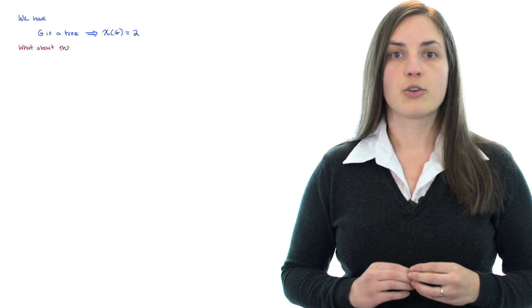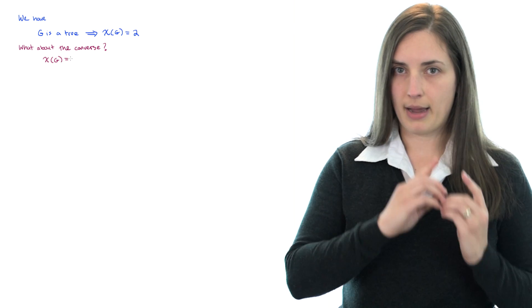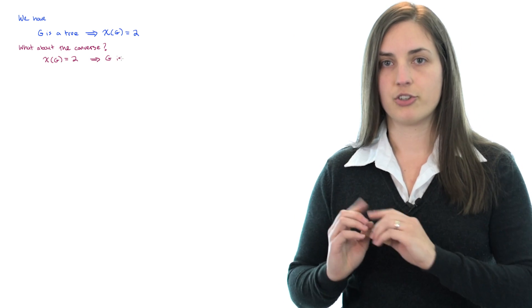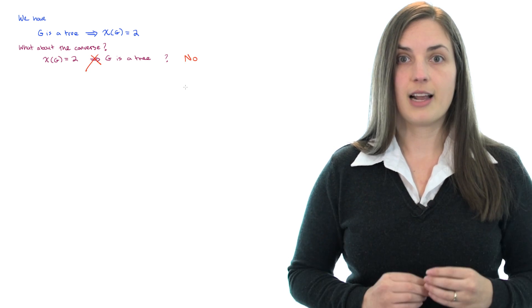So we've talked about the idea that if we have a tree, then the chromatic number is 2. And we might ask, what about the converse? The converse would say that if the chromatic number is 2, then we have a tree. Is this true? Well, no, it's not true.